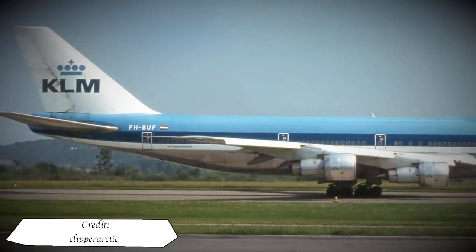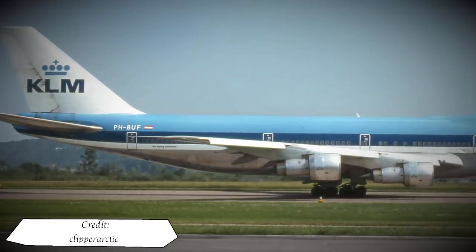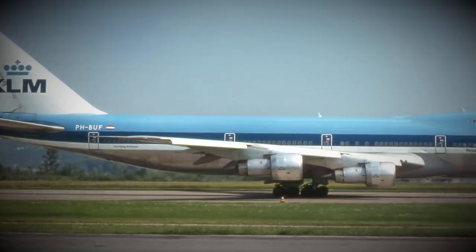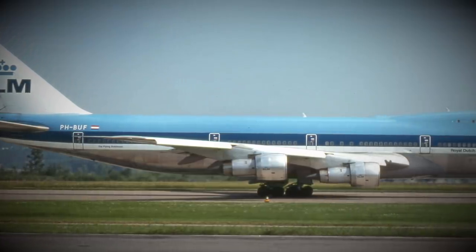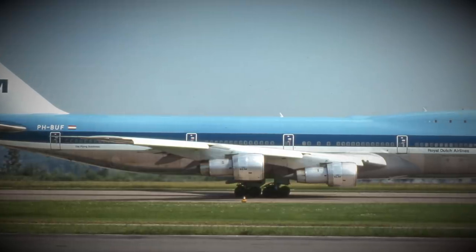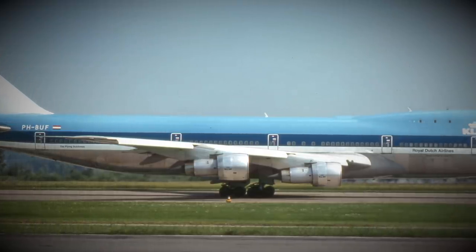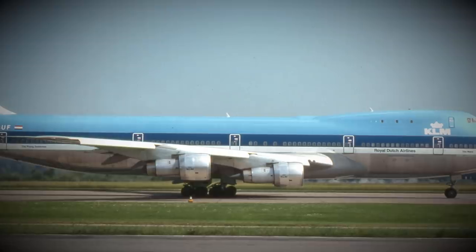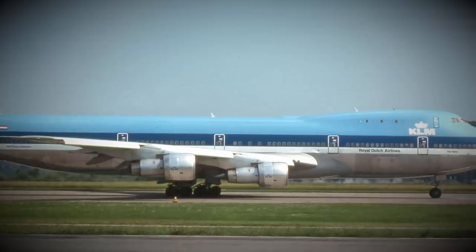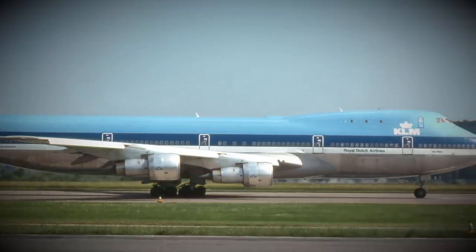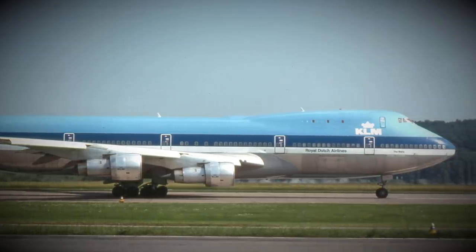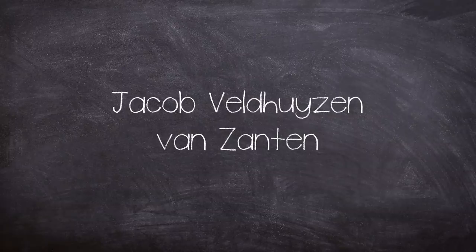Another plane caught out during the disruption of services to Gran Canary Airport was KLM 4805, which much like Pan Am 1736 had found itself diverted to Tenerife. The KLM aircraft was also a 747 and was chartered by the Holland International Travel Group and had departed from Amsterdam Airport, Schiphol, Netherlands. The crew were also experienced, but was captained by somewhat of a KLM celebrity, Jacob Veldhuyzen van Zanten, aged 50.